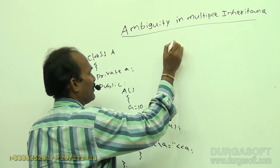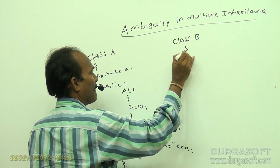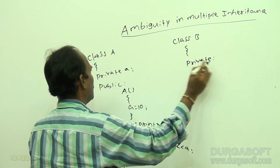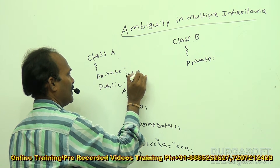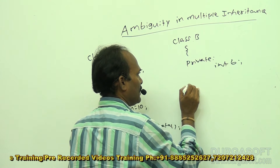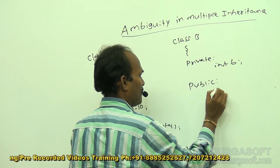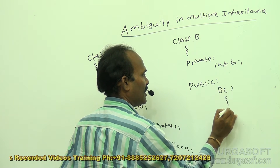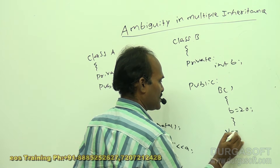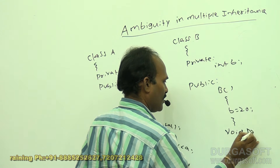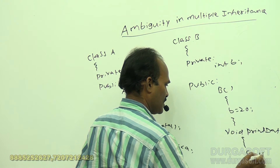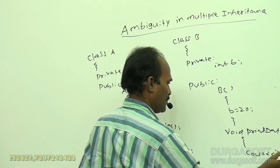I will close class A and define one more class called class B. Here also I will define one variable in the private section — integer B. In the public section, through the constructor I am assigning a value into B. I will also write the same function, void print data, which is also written in class A — it prints the B value.